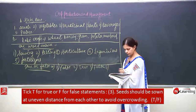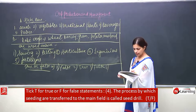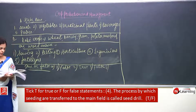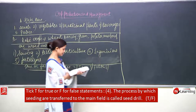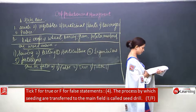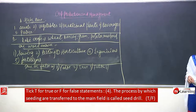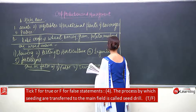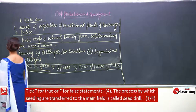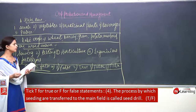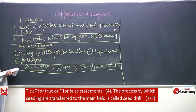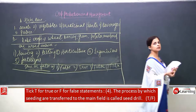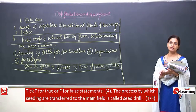Fourth: the process by which seedlings are transferred to the main field is called seed drill — no. It is known as transplantation, which is done in the case of rice. It is sown somewhere first and then brought up to the fields.